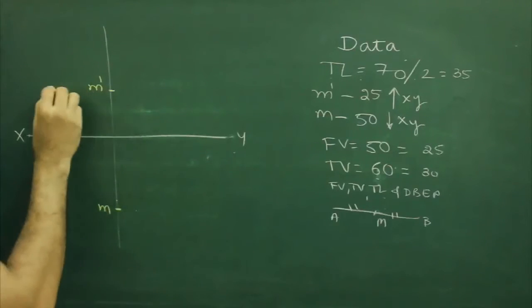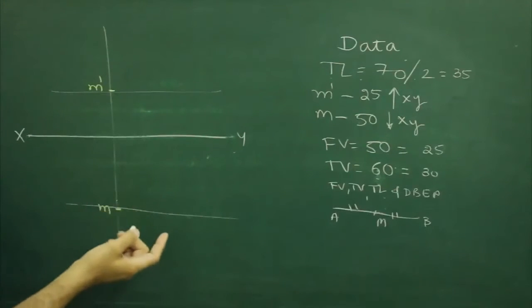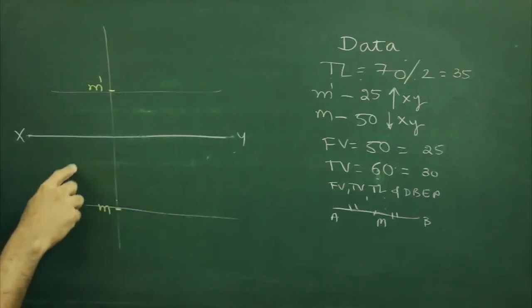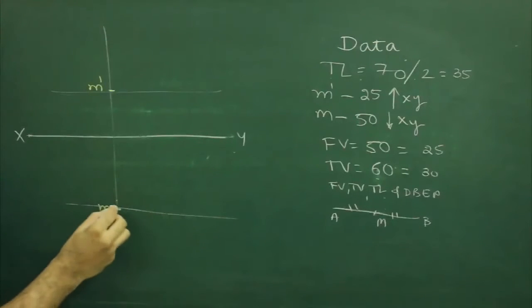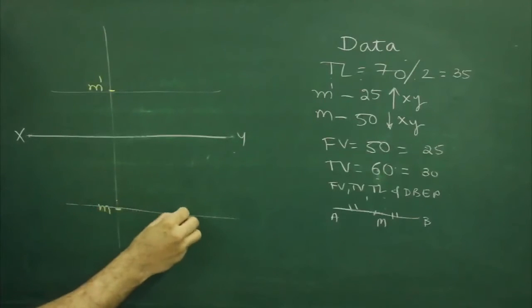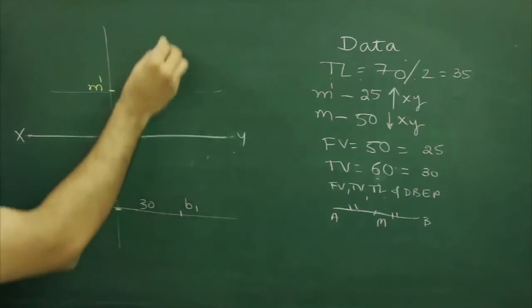If you see, this is almost the same sum as we have done in sum number 9 where front view, top view and true length is given. So what we will do, we will mark top view length, that is mB1. Here we will mark as 30, half of top view.